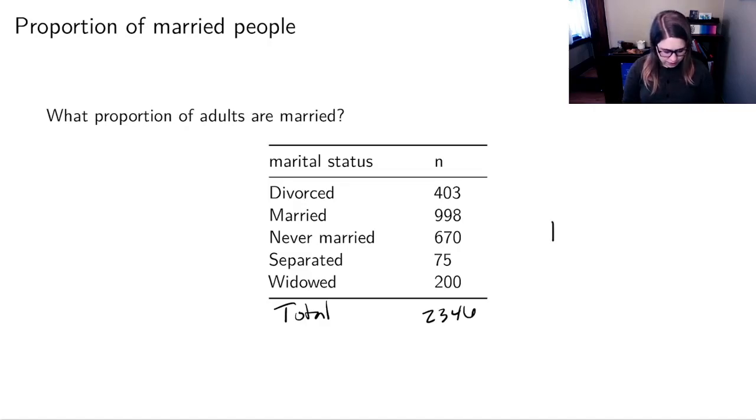And if I wanted to figure out the P hat, the proportion of people who are married, I would just say how many people are married 998 out of how many people total 2346. And I would do that division and I would get 0.425. I guess I could round that up to a 0.43 if I wanted to. So about 43% of the people in my general social survey are married.